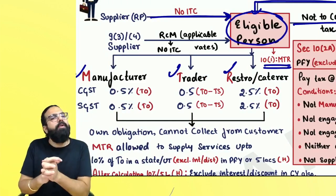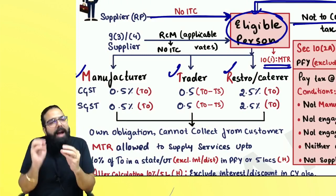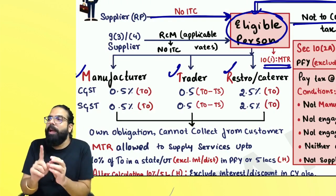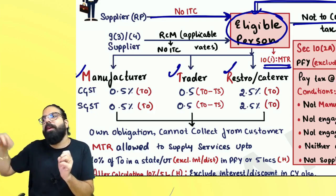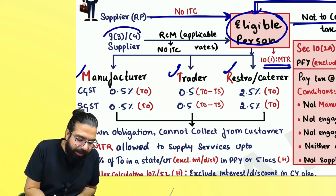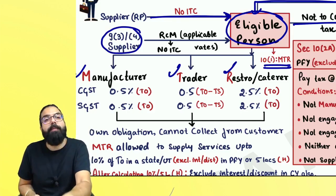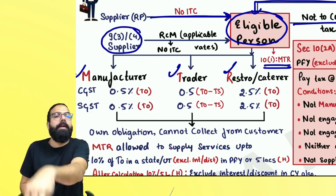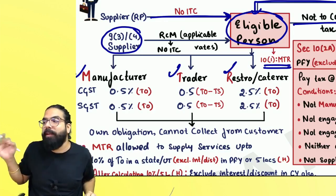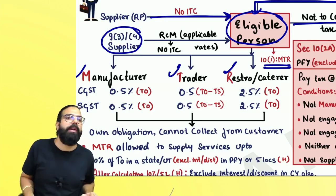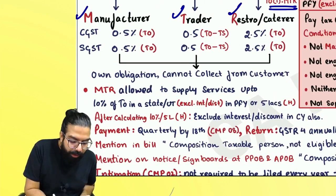If you are under composition scheme and you take any services — for example, you took a GTA service — you should pay GST under RCM. You do not pay only one percent; whatever inward supplies you take under Section 9(3) and 9(4), if you are liable to pay GST under RCM, you have to pay at the applicable rate. And you will not be able to take any ITC on that RCM payment either.